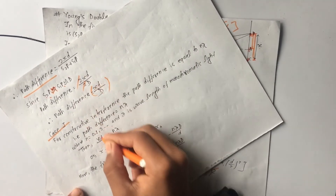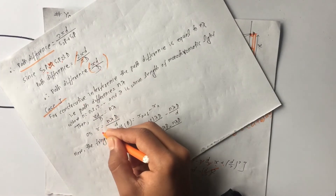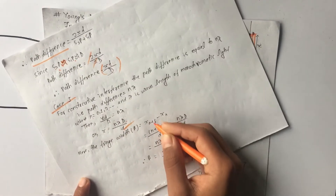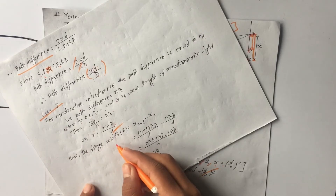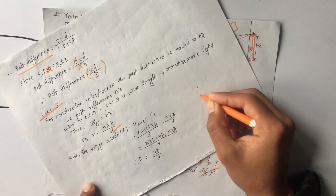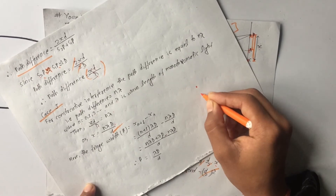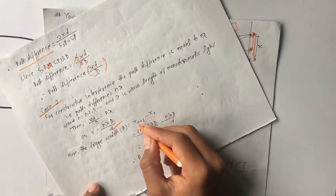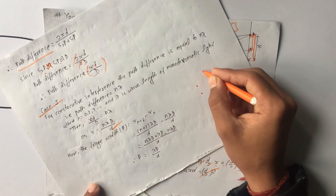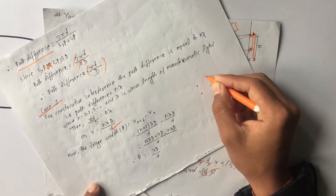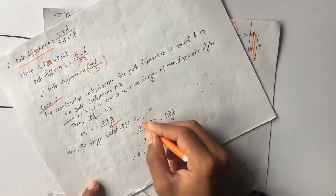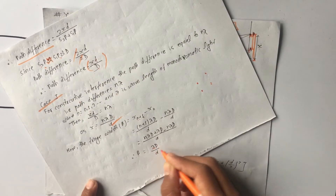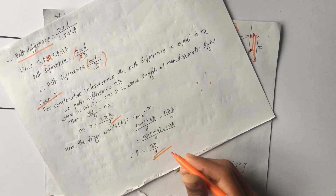Setting xd/D equal to n lambda, we get x equals n lambda D/d. The bright fringes occur at these positions. The fringe width beta is xₙ₊₁ minus xₙ, which gives lambda D/d. This is the fringe width for bright fringes.